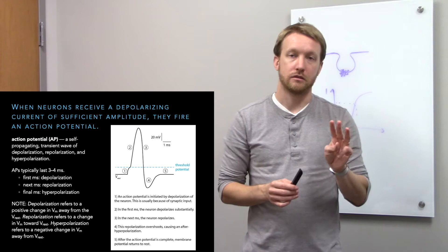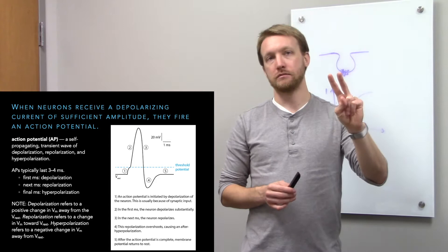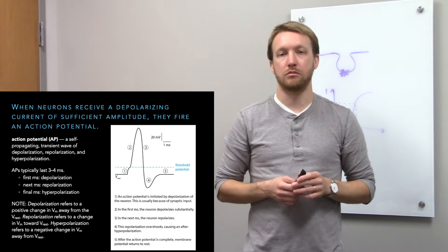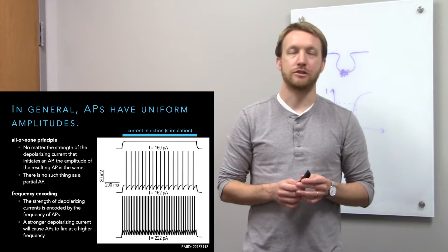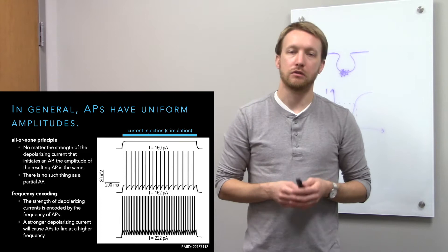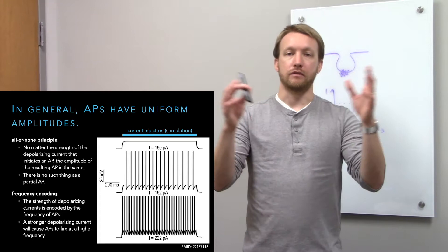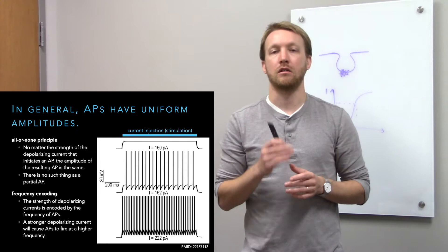You can break the action potential into three phases: the initial depolarization after threshold, lasting about one millisecond; repolarization in the next millisecond where we go back toward rest; and the after hyperpolarization in the final one to two milliseconds, where membrane potential is briefly held below the resting membrane potential. Action potentials have uniform amplitudes and generally uniform durations, because the ion channels underlying them — though individually stochastic — collectively generate consistent timing and amplitude.